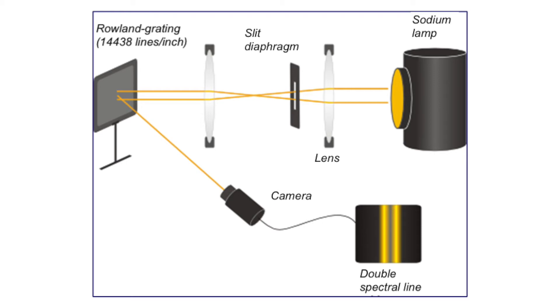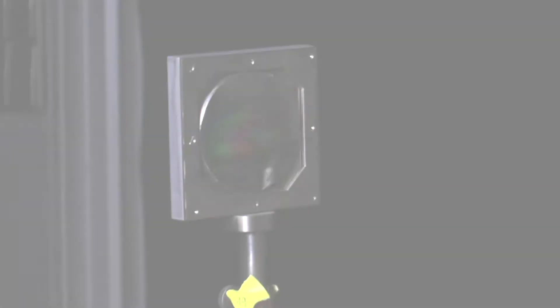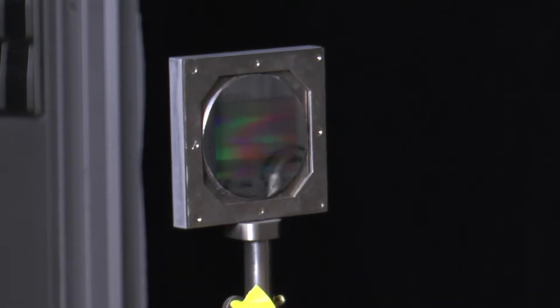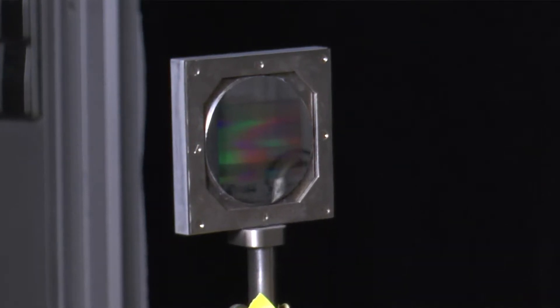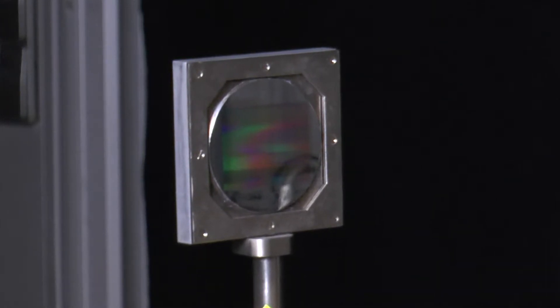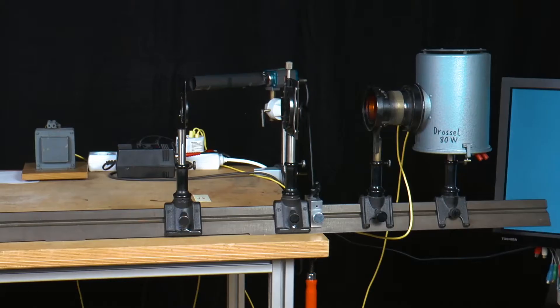Behind it there is an imaging lens and a Rowland grating with 14,438 lines per inch, that is 568 lines per millimeter. The Rowland grating is a reflective diffraction grating with the grating strokes engraved on the concave side of the spherical cap made of mirror metal. The camera is directed at this grating from the side, which records the diffraction image. It is placed approximately symmetrically to the slit and is located on the so-called Rowland circle.